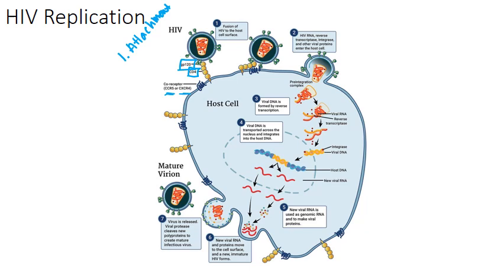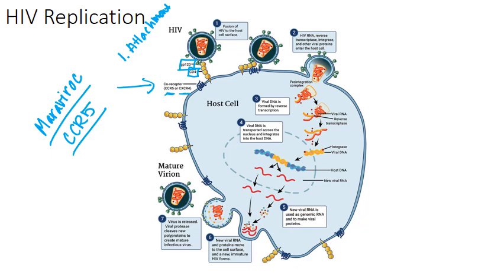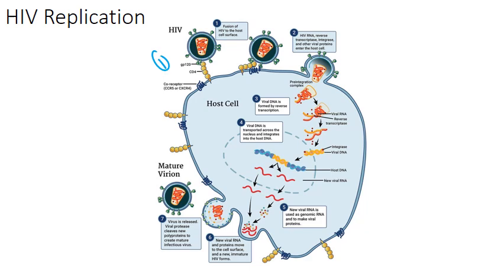This is the stage where the attachment inhibitor antiretroviral drug Maraviroc works. This one has not actually been used a ton recently. It really only works to block the GP120-CCR5 binding, so if you have any CXCR4 virus at all, this will not be an effective antiretroviral. It really only works in M-tropic virus. So attachment can be inhibited by Maraviroc.